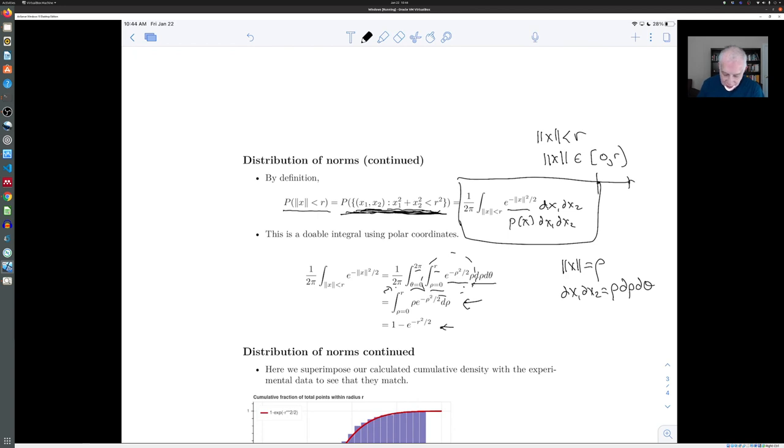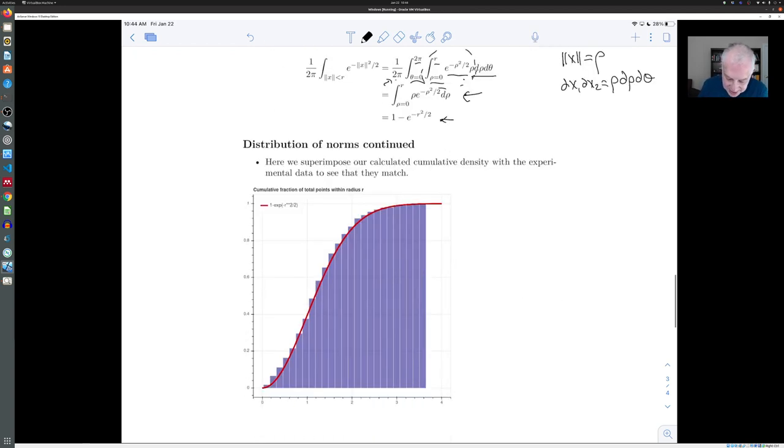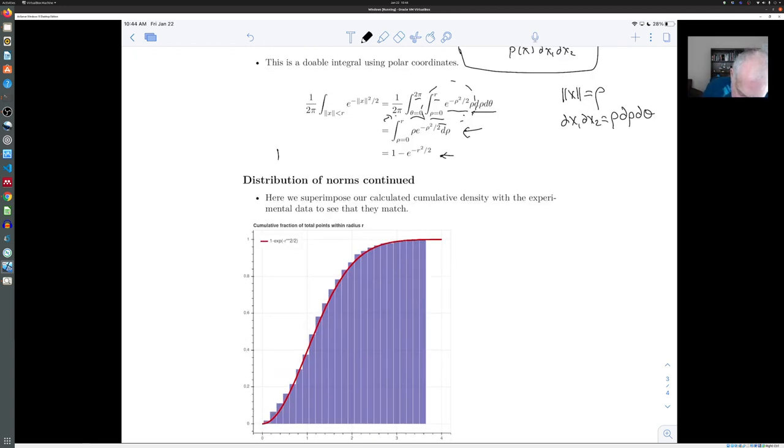And if we go back to our cumulative histogram, so this is what we've computed here is the probability that the norm of X is less than R as a function of R. And if we take that function and we superimpose it, that's the red line here. We superimpose it on top of our previous experimentally obtained histogram, you see that they match up very closely.